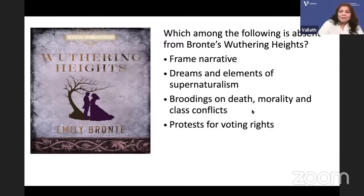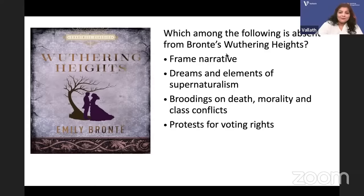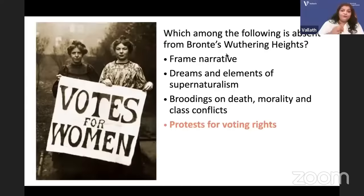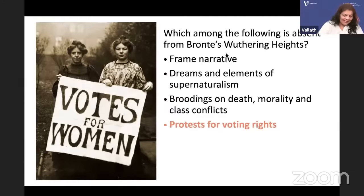Which among the following is absent from Bronte's Wuthering Heights? Is there a frame narrative, dreams and elements of supernaturalism, broodings on death and mortality and class conflicts, or protests for voting rights? Voting rights was not there in Wuthering Heights — the women's suffragette movement came later. Women started to clamour for votes only later; it was not there in Victorian England.